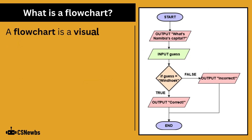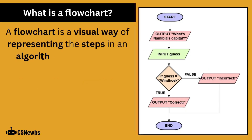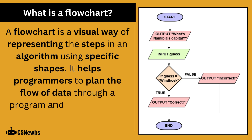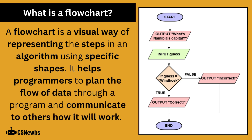A flowchart is a visual way of representing the steps in an algorithm, using specific shapes. It helps programmers to plan the flow of data for a program and communicate to others how it will work.